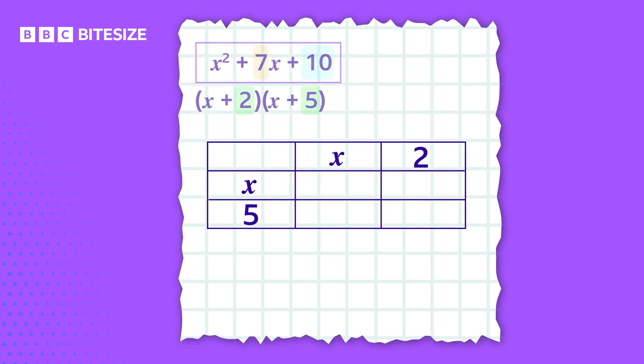Multiplying the terms together gives us x times x, which equals x squared, x times 2, which equals 2x, 5 times x, which equals 5x, and 5 times 2, which equals 10. Add all these values together and we have x squared plus 7x plus 10.